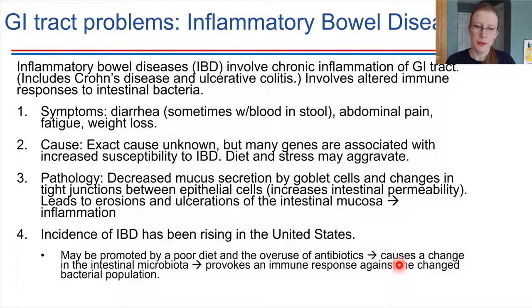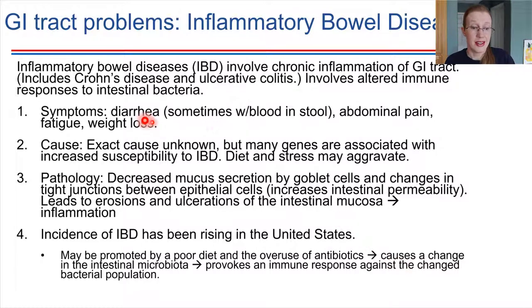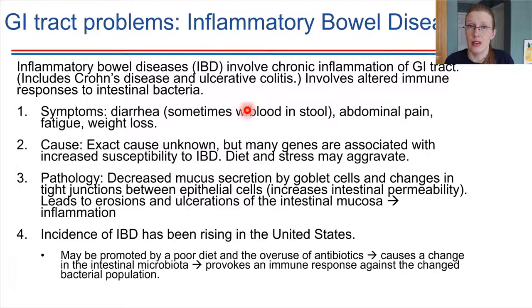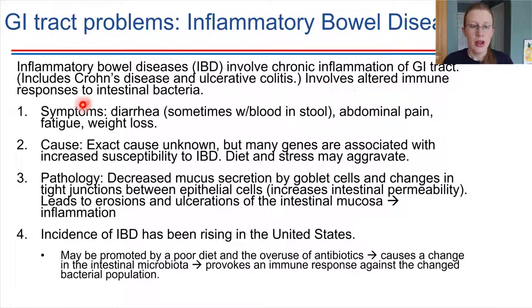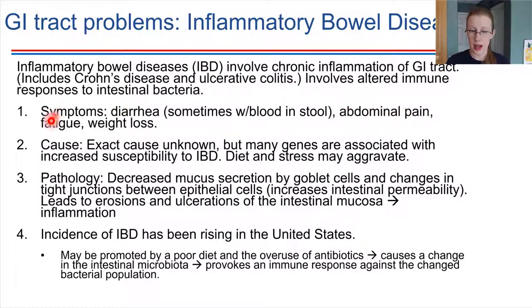This leads us to inflammatory bowel disease. The key symptom is diarrhea that persists — it doesn't just clear up and go away. Sometimes it will even have blood in it due to the inflammation. Abdominal pain, discomfort, fatigue, and unintended weight loss — all of those symptoms together could indicate that somebody has inflammatory bowel disease.